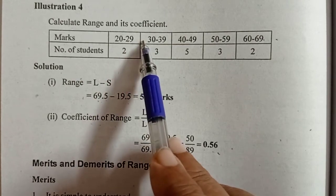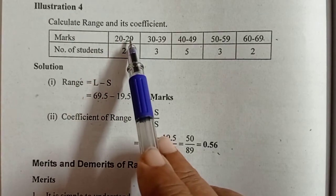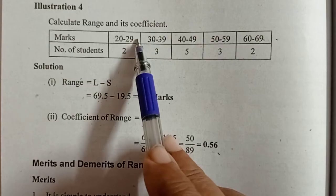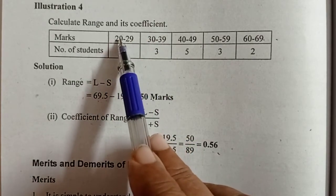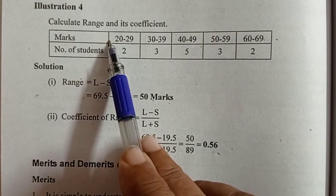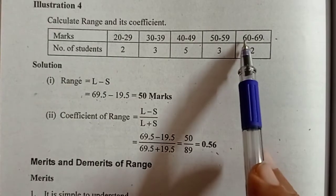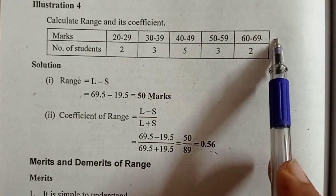We will subtract 0.5 from each lower limit and add 0.5 to each upper limit. So the first class becomes 19.5 to 29.5. The last class is 59.5 to 69.5.